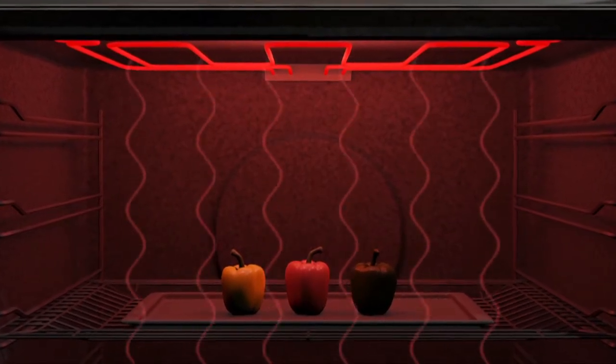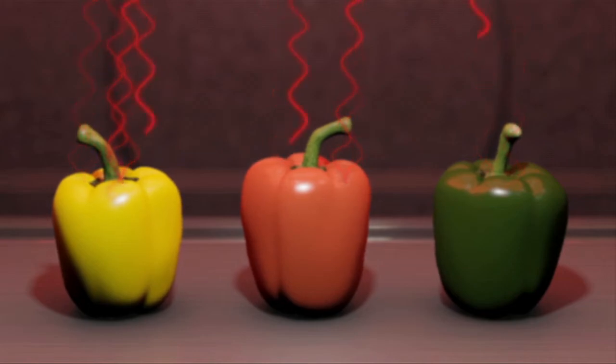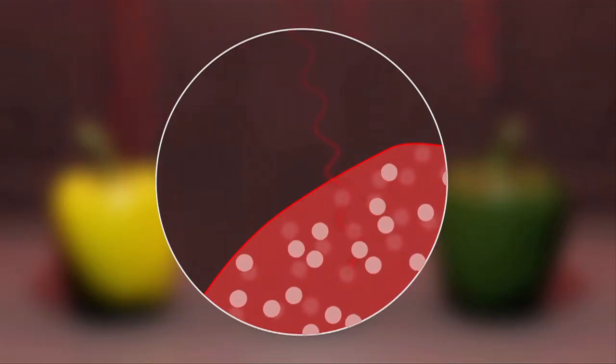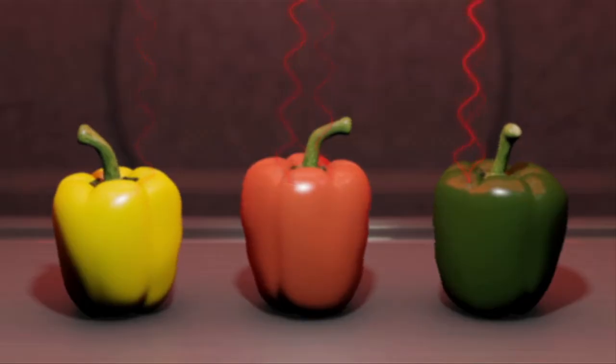As these photons hit food, they can be reflected away or absorbed. If they are reflected, no energy transfer takes place. If they are absorbed, they transfer their energy to the molecule that absorbed them, making it move faster. This heats the surface of the food.